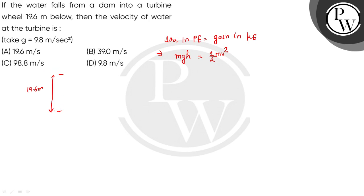Now, what will the velocity v be? The gain in kinetic energy is equal to half mv squared, so m will cancel. v will be equal to the square root of 2gh — the square root of 2 into g (value 9.8) and h (value 19.6).